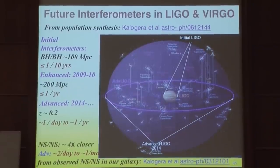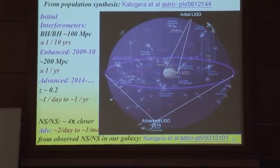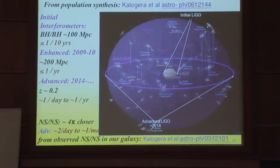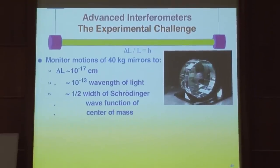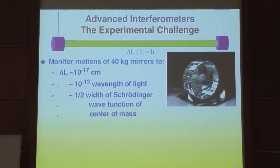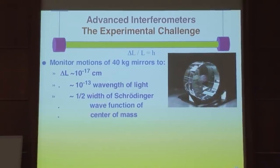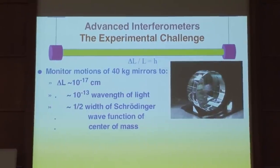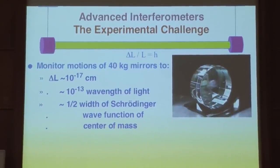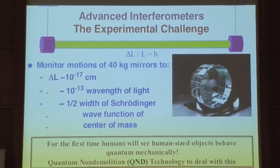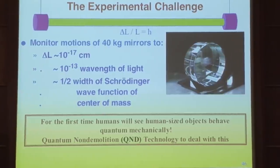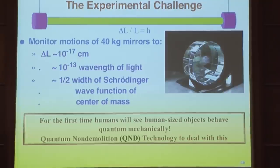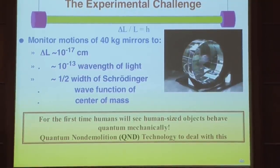Advanced interferometers have an extreme experimental challenge: monitoring the motions of 40 kg mirrors to an accuracy of 10⁻¹⁷ cm—10⁻¹³ of the wavelength of light, or the half-width of the Schrödinger wave function of the center-of-mass degree of freedom of a mirror. So for the first time in these advanced detectors, humans will see human-sized objects—40 kg mirrors—behave quantum mechanically. In order to deal with this, we have built into the design of these detectors so-called quantum non-demolition technology.